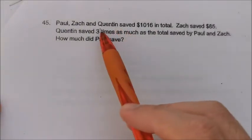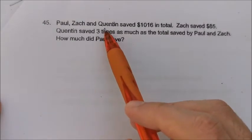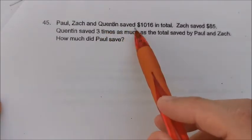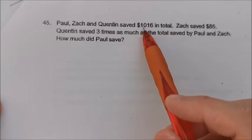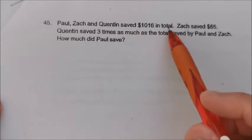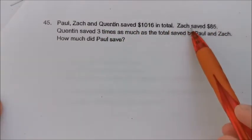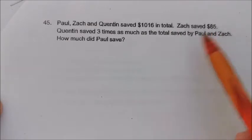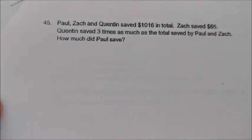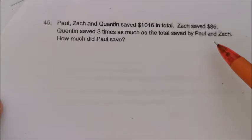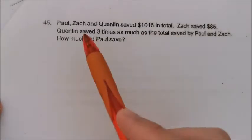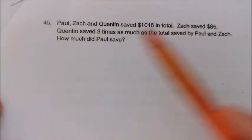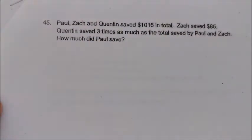Paul, Zach and Quintin saved $1,016 in total. Zach saved $85 and Quintin saved three times as much as the total saved by Paul and Zach. So how much did Paul have?